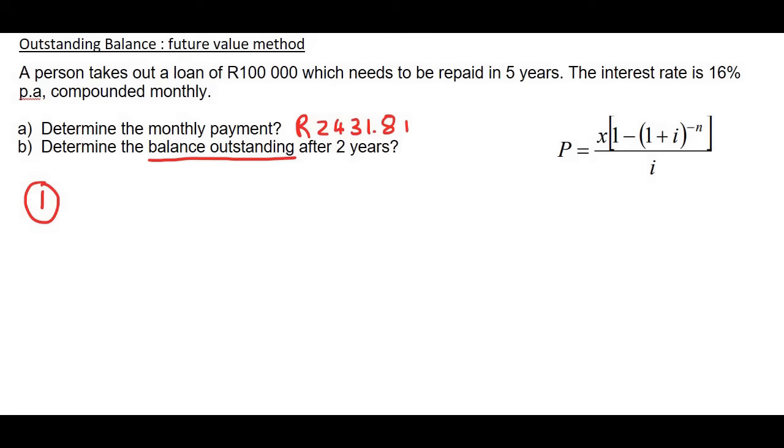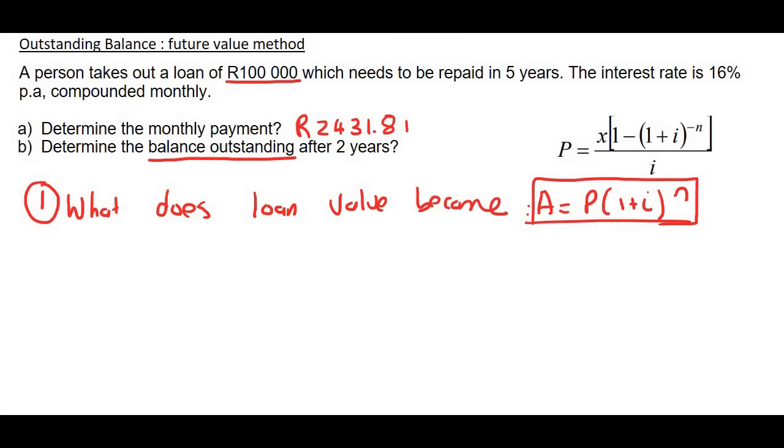Number one, you need to see how much does the 100,000 Rand become? So what does the loan value become? And for that, you're just going to use the normal grade 11 formula. So that'll tell us how much does the 100,000 Rand become? Because remember, the loan amount increases when you walk out the bank. Like let's say you walk out the bank and you don't make any payments to your loan. The bank is going to penalize you and that 100,000 Rand is going to grow.